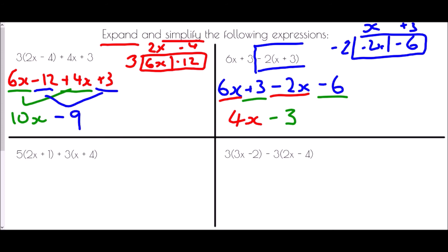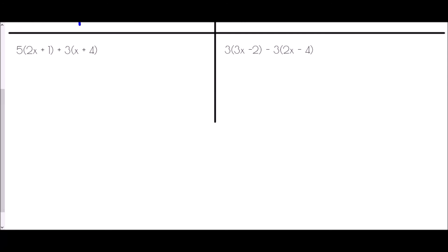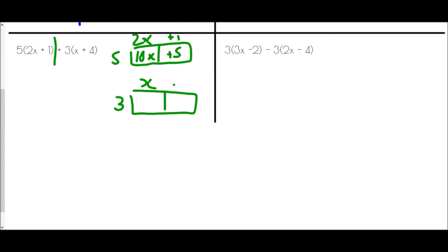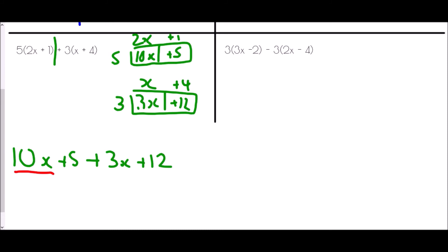With two sets of brackets, we handle each separately. 5(2x + 1) gives 10x + 5, and 3(x + 4) gives 3x + 12. Bringing them together: 10x + 5 + 3x + 12. Collecting like terms: 10x + 3x = 13x, and 5 + 12 = 17. Answer: 13x + 17.